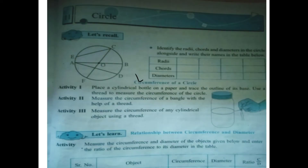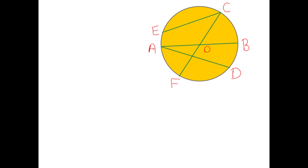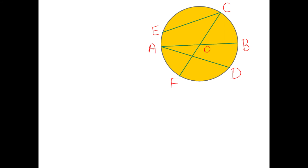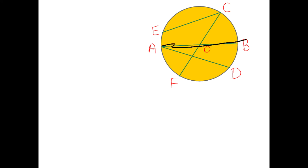Now next is diameters. What is called a diameter? Write down this definition: the diameter of a circle is a straight line joining a point from one end of the circle to a point on the other end of the circle. The diameter starts from one end of the circle — point A is one end, point B is the other end — and it passes through the center of the circle. Segment AB and segment FC are the two diameters of the circle.